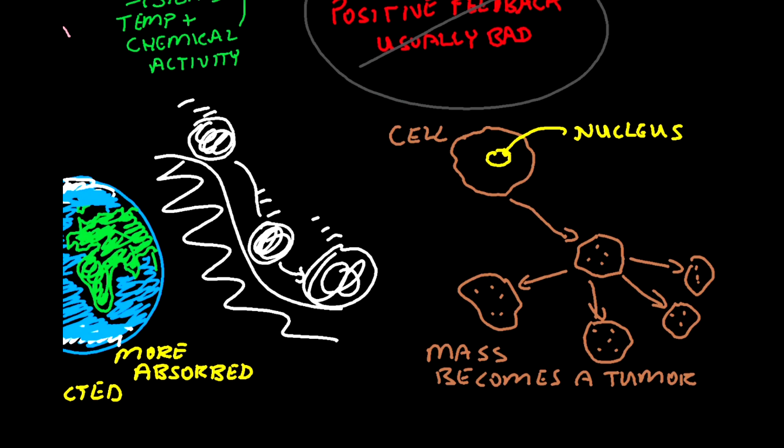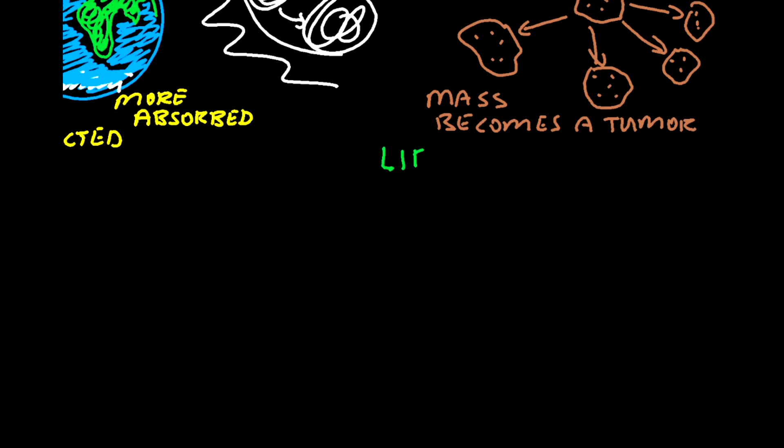So these are all examples of positive feedback loops. But generally, what the body is needing for maintaining homeostasis are negative feedback loops to keep things constant.